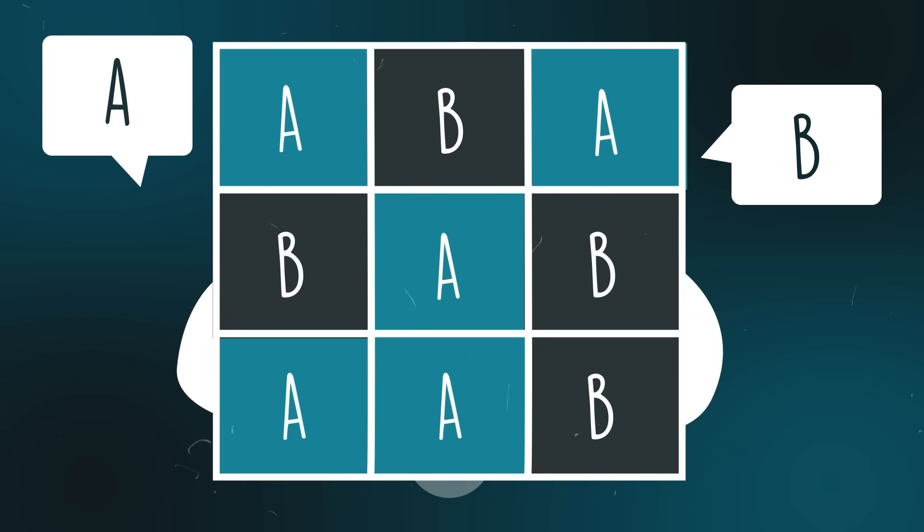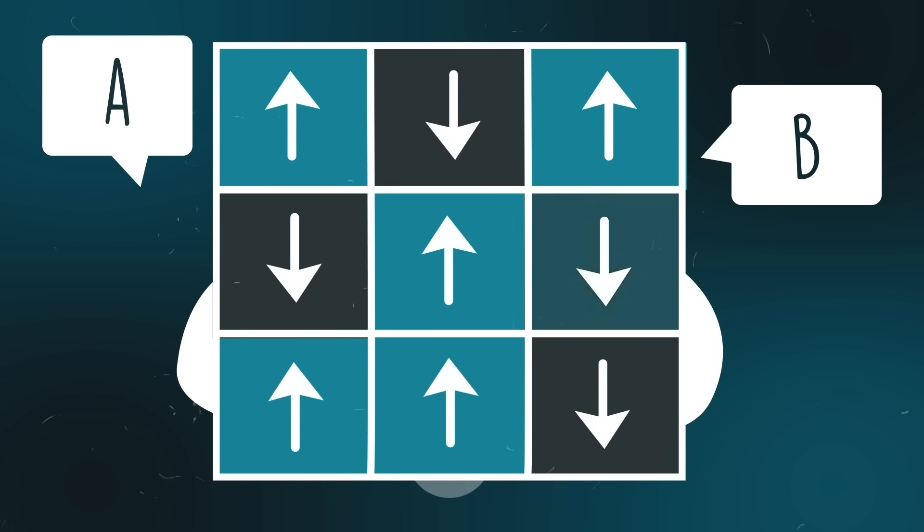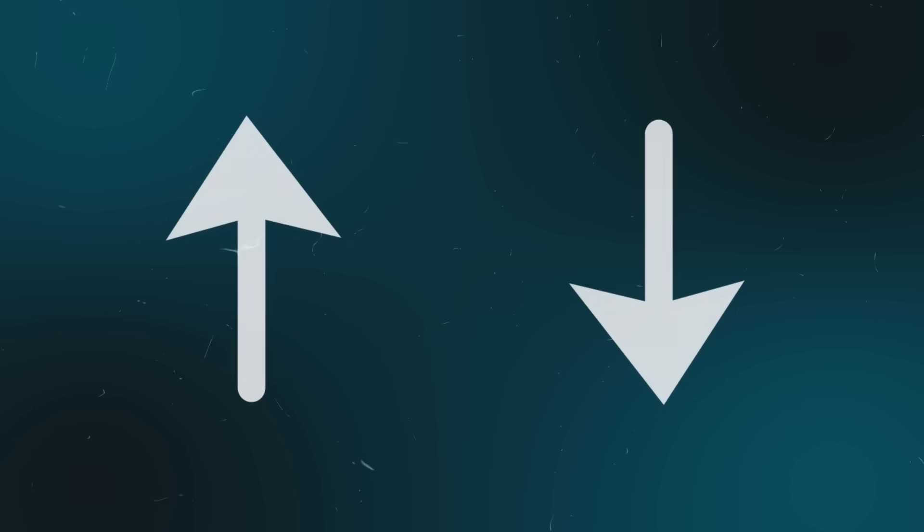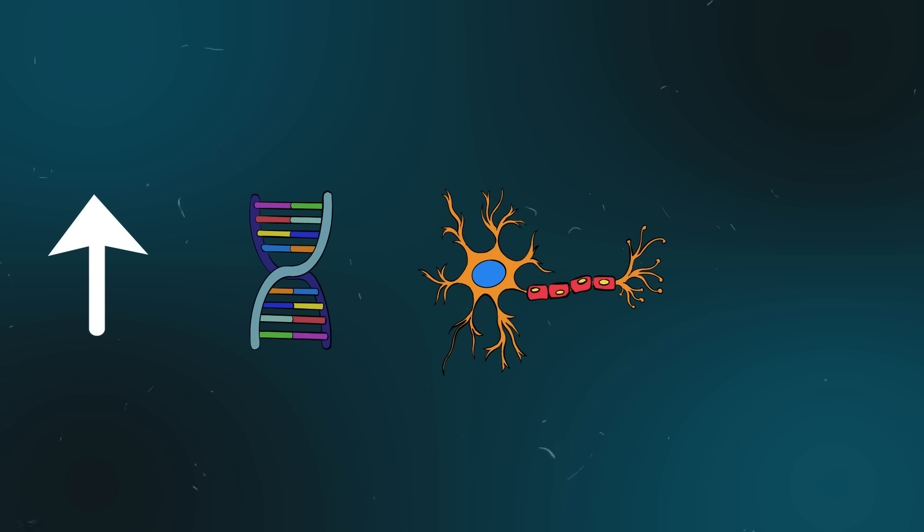A final and perhaps most surprising example the Ising model works for is opinion formation on social media. In other words, dipoles can represent individuals who make up the network, and the up and down states can be identified with two different answers to a given question. All of this raises an important question. Why? Why can a single model with just two binary options and some simple rules apply to so many different phenomena? A dipole is very different from a gene, and a neuron is very different from an individual person. Yet it appears that the differences between these micro-level components are unimportant for some reason. How can that be?